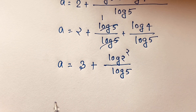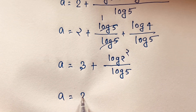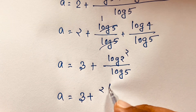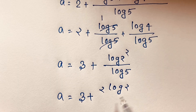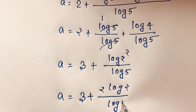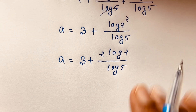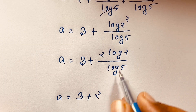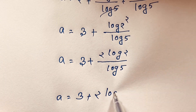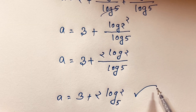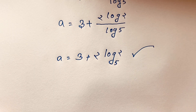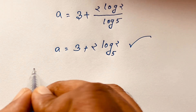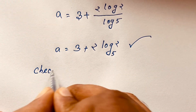Since log 4 equals log(2²) and 2² equals 4, we have a is equal to 3 plus 2·log 2 over log 5. Applying the change of base formula, this is a is equal to 3 plus 2·log₂ base 5. This is our final answer to this exponential math olympiad question.